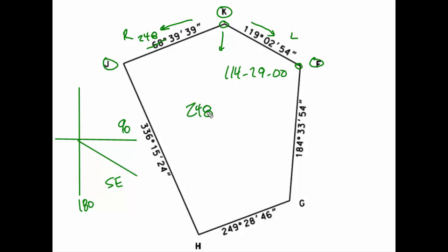I'll do the math. I'll have 248, 39, 39, and I will subtract 119, 02, 54. Notice 248, 39, 39 is the direction on the right relative to point K, and 119, 02, 54 is on the left side of point K when we're facing the interior angle. My result here will be 129, 36, 45. That is the angle here at point K.